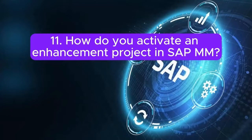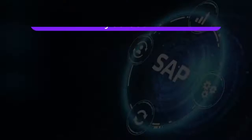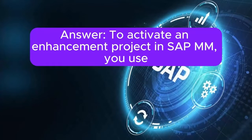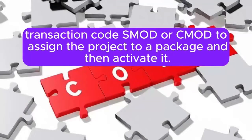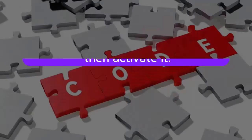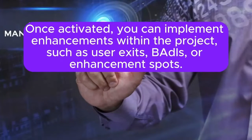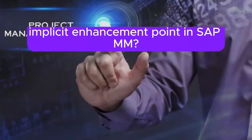How do you activate an enhancement project in SAP MM? To activate an enhancement project in SAP MM, you use transaction code SMOD or CMOD to assign the project to a package and then activate it. Once activated, you can implement enhancements within the project, such as user exits, BAdIs, or enhancement spots.